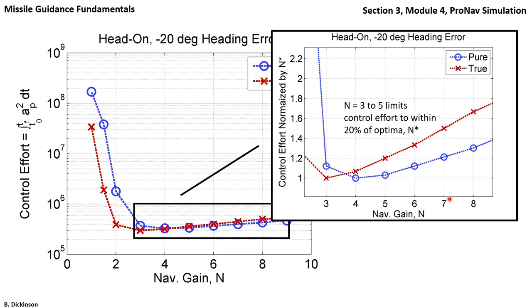For pure pronav, beyond a value of 5, at 6, we only have about 10-15% more control effort, and at 7, about 20%. For true, for N equals 6, 30% more effort, and for N equals 7, 50% more effort. So the control effort over the course of the engagement can be significantly greater for pure or true pronav as N increases.